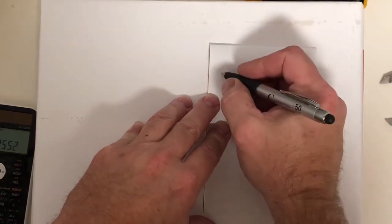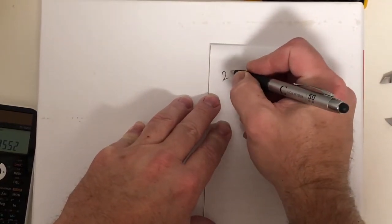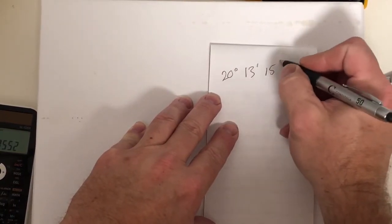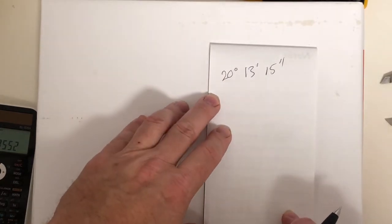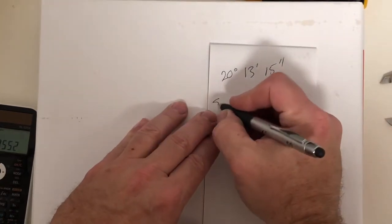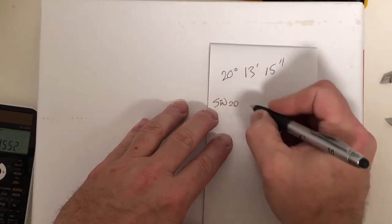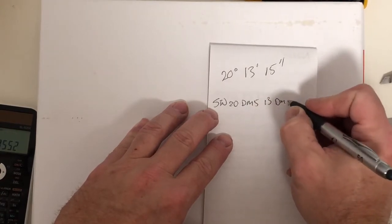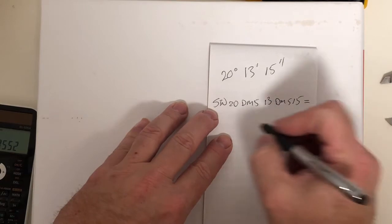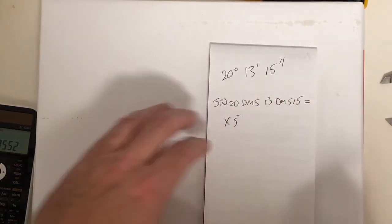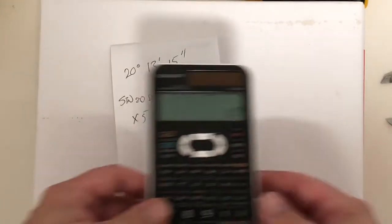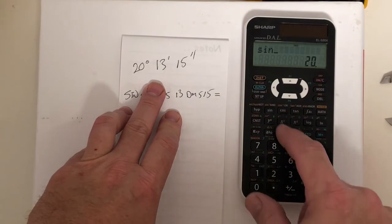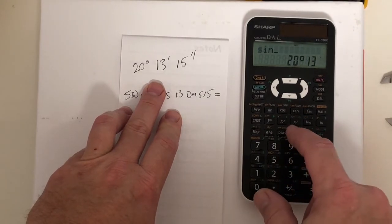Let's say 20, 20 degrees, 13 minutes, 15 seconds. So how are we going to do this? We're going to go sine, 20, DMS, 13, DMS, 15 equals times 5, equals.